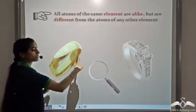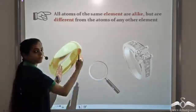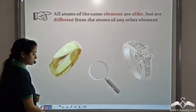But the atoms of gold, they were different from the atoms of silver. So all atoms of the same element are alike, but they are different from the atoms of different elements.